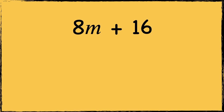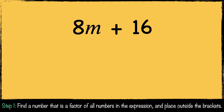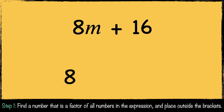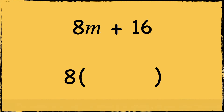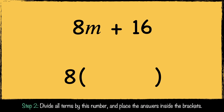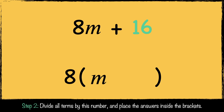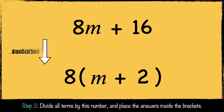Here's another example: 8m + 16. We need to find a factor of the terms in this expression. 8 is a factor of both 8 and 16, so we put 8 in front of the brackets. Now we divide our terms by 8: 8m divided by 8 is m, and 16 divided by 8 is 2. So this expression can be factorized to 8(m + 2).